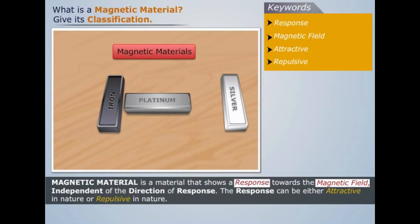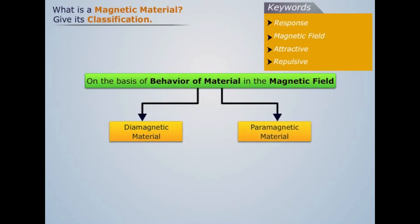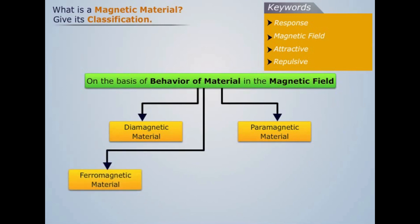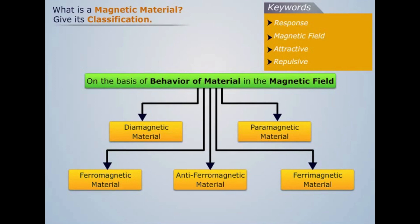The response can be either attractive in nature or repulsive in nature. On the basis of the behavior of a material in the magnetic field, a magnetic material can be classified as: Diamagnetic material, Paramagnetic material, Ferromagnetic material, Antiferromagnetic material, and Ferrimagnetic material.